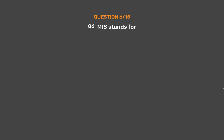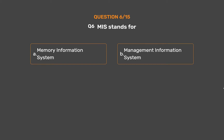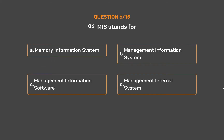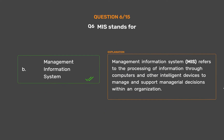Question No. 6. MIS stands for. Option A: Memory Information System. Option B: Management Information System. Option C: Management Information Software. Option D: Management Internal System. The correct answer is Option B — Management Information System. MIS refers to the processing of information through computers and other intelligent devices to manage and support managerial decisions within an organization.